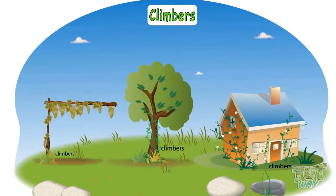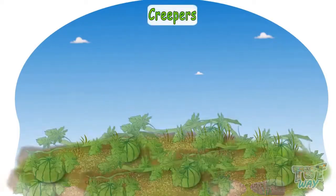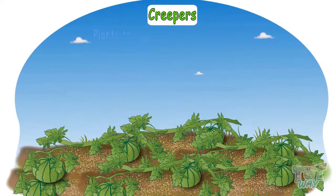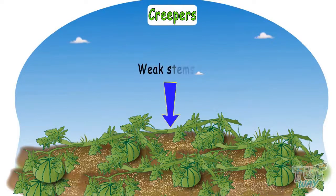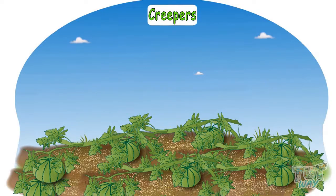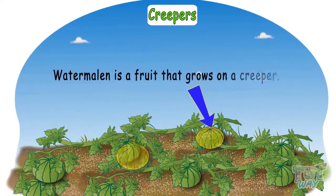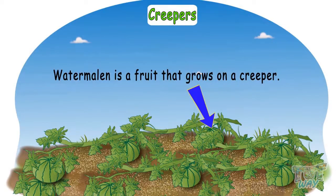These are examples of climbers. Now let's see what are creepers. Plants that grow along the ground are called creepers. They too have weak stems. This is an example of creepers. Watermelon is a fruit that is grown on a creeper.